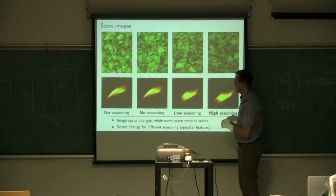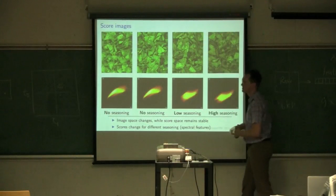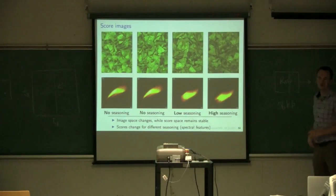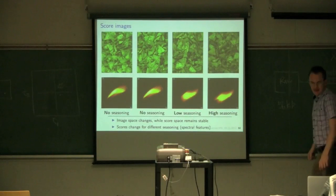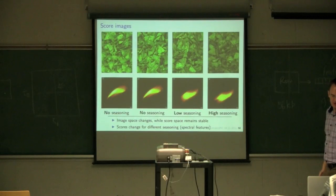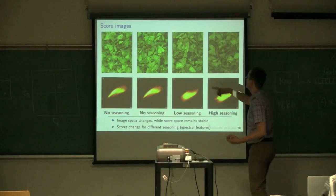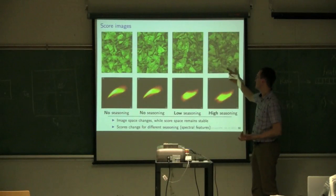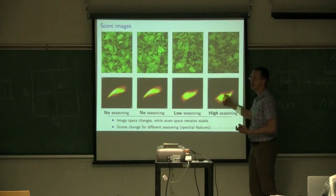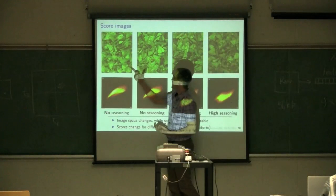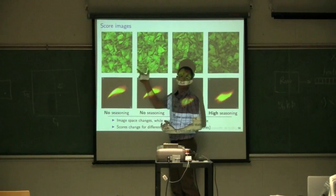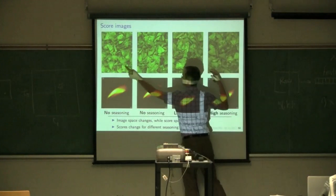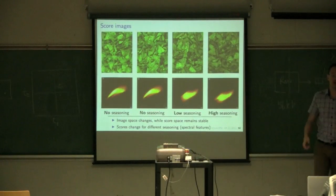As we apply seasoning to the food, that score space starts to shift. So it's shifting in this diagonal direction. As more seasoning is applied to the food, notice that this clustering has shifted further down. And then for this case of very high seasoning, it's even more so. That's kind of expected because of the spectral variation. We know that as we apply seasoning to the food, the spectrum is varying.